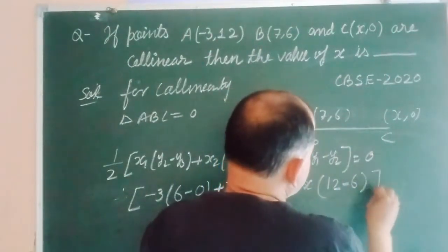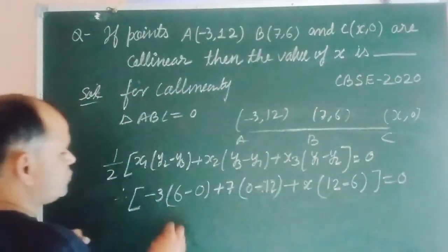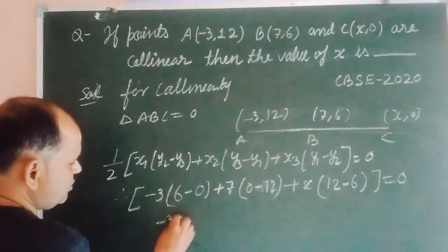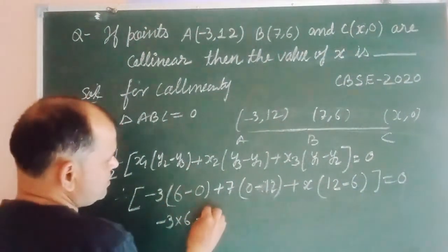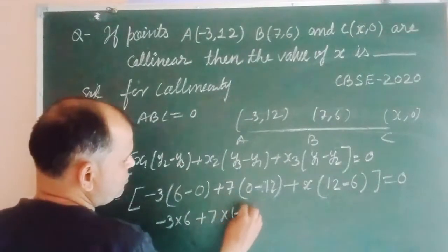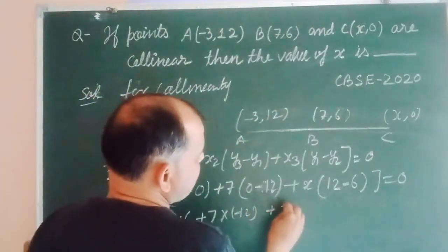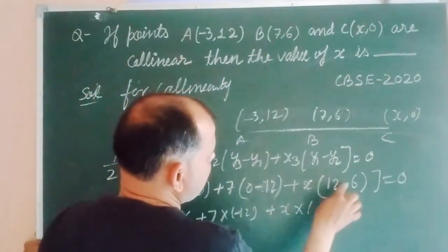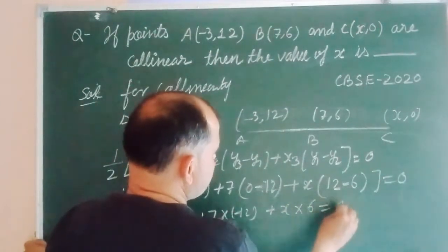So 6 minus 0 is 6, minus 3 into 6, plus 7 into minus 12, plus x into 12 minus 6, this is 6, equal to 0.